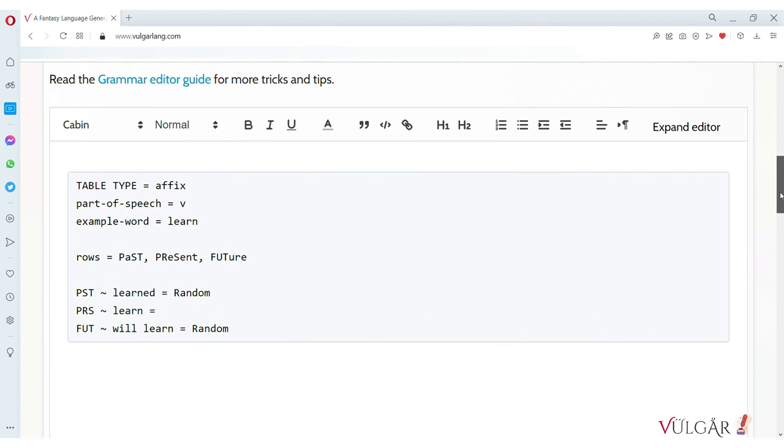English past tense is usually an ED suffix which would be written in an affix table like this, but English also has some irregular past tense verbs that change the vowel in the word. For example,